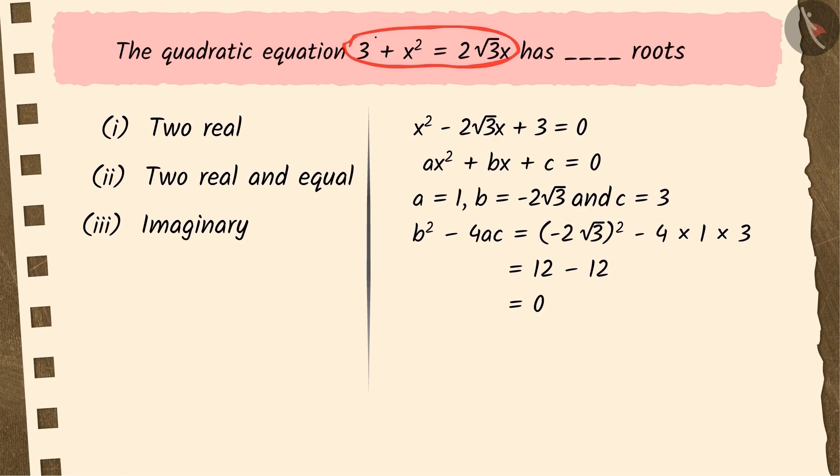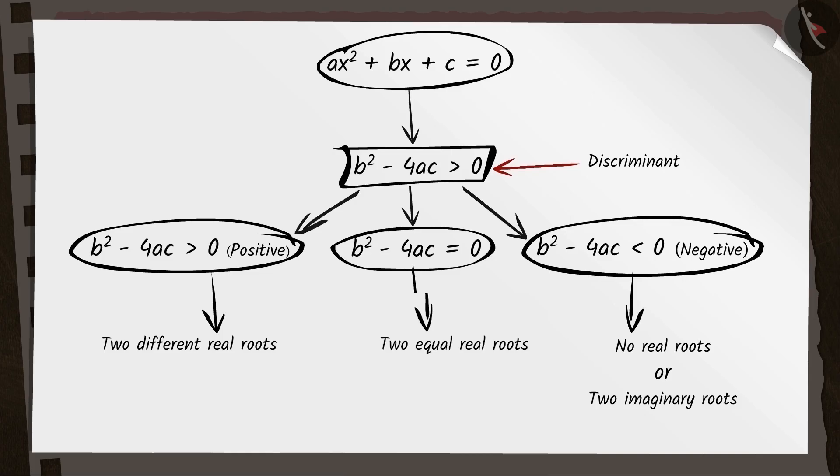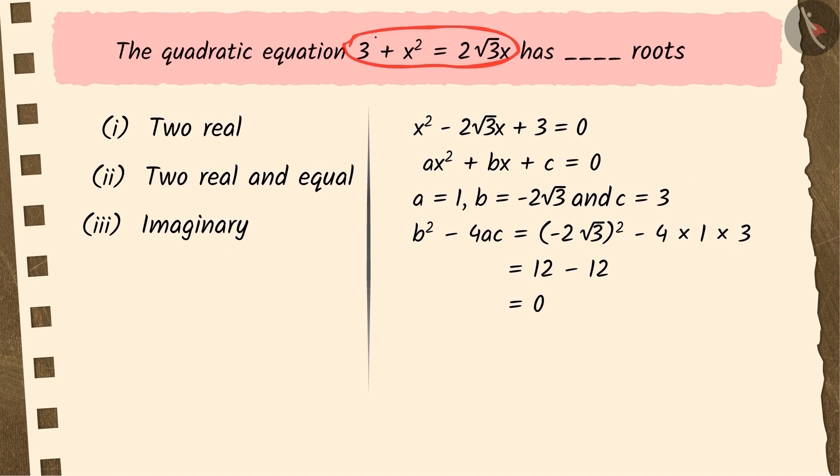Sushma solved the question correctly and found that the quadratic equation would have two real roots, but she forgot to mention whether those two real roots would be the same or different. Due to which, Sushma's answer, that is option 1, went wrong.